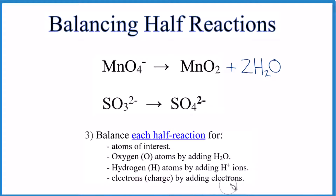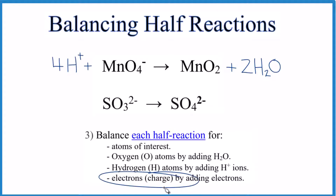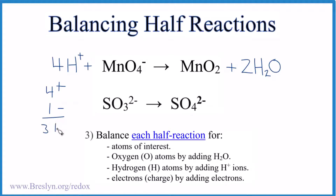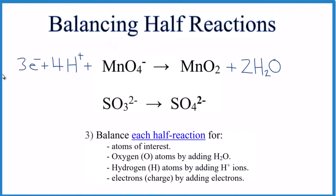Now we need to balance the hydrogen atoms. We're in acidic medium, so we use H+ ions. We have two times two — four hydrogens — so we'll add four H+ ions; the hydrogens are balanced. For the charge: four times one plus gives four plus, and then we have one minus from the ion, giving a total of three plus on the left. We need to add three negative charges — three electrons — to balance it. Now the charge on both sides is zero and the half reaction is balanced.